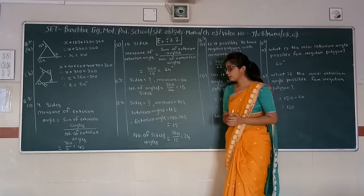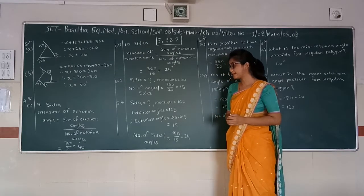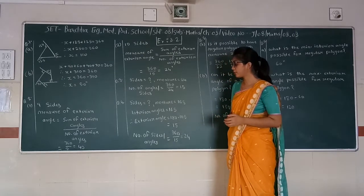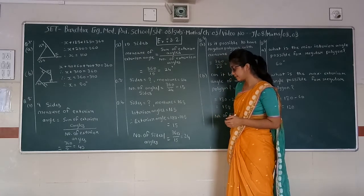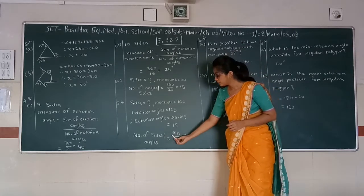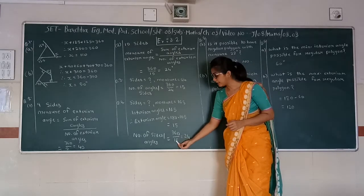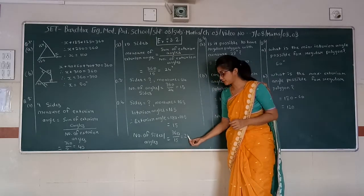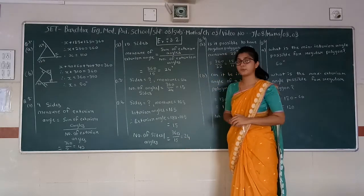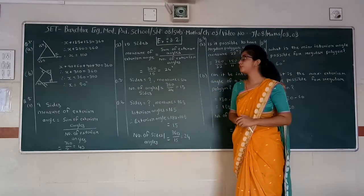So the number of sides or number of angles is equal to 360 divided by 50, which gives the answer 24.